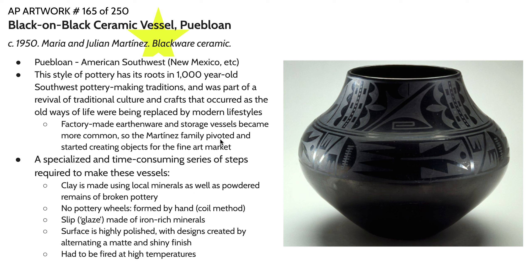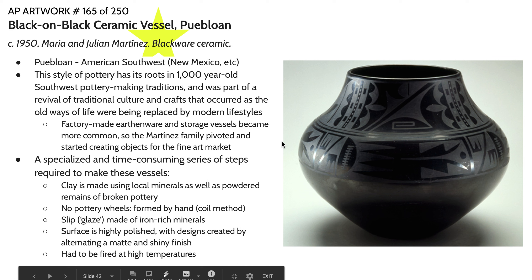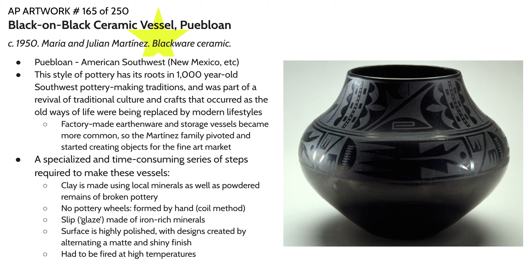The process involved in creating these pieces was extremely specialized and time consuming. The clay was made using local minerals, and they also powdered the remains of broken pottery to make a kind of volcanic ash that made the clay very strong. There were no pottery wheels, so each vessel was formed by hand by Maria using a coil or pinch pot method. A slip or glaze made of iron-rich minerals was applied, and then the surface was highly polished using a stone — a very time consuming process, rubbing the surface until it's shiny. After that, you have to fire the piece at very high temperatures, which was very difficult without an industrial kiln. Subterranean kilns had to be made underground and fueled with specific materials — in this case, I believe manure was used to maintain the higher temperatures.